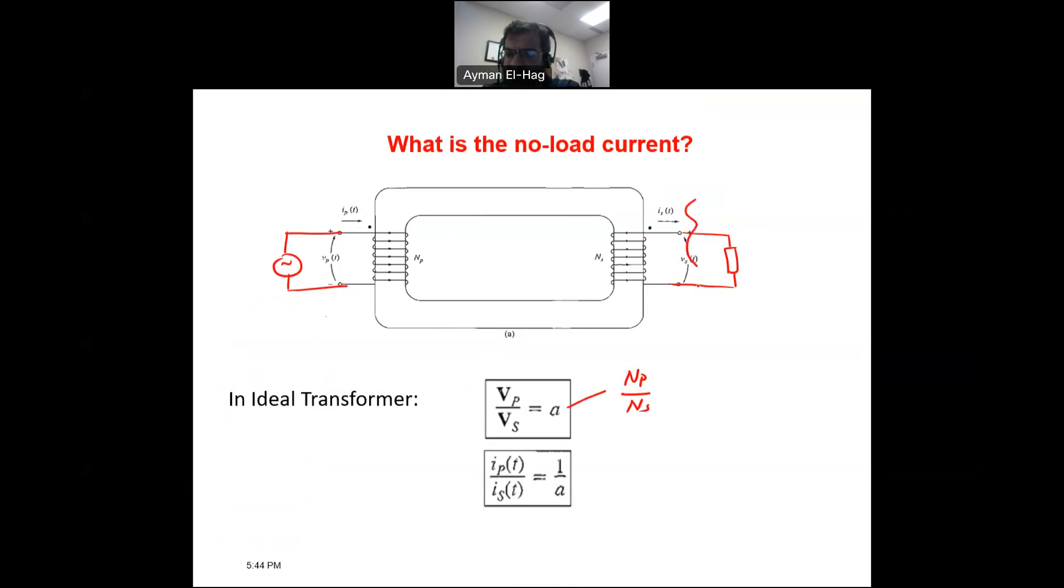Now, if I disconnect the load and make the transformer secondary side an open circuit, IS is equal to 0. According to this formula, if IS equals 0, we know that IP equals IS times 1 over A. Since IS is 0, IP should equal 0. However, if we measure the current here using an ammeter, you will see that there is a current. And this current is the one that we call the no-load current. So the meaning of the word no-load is when the secondary side has no load in it, there will be a current at the primary side. So that is the meaning of the no-load current.